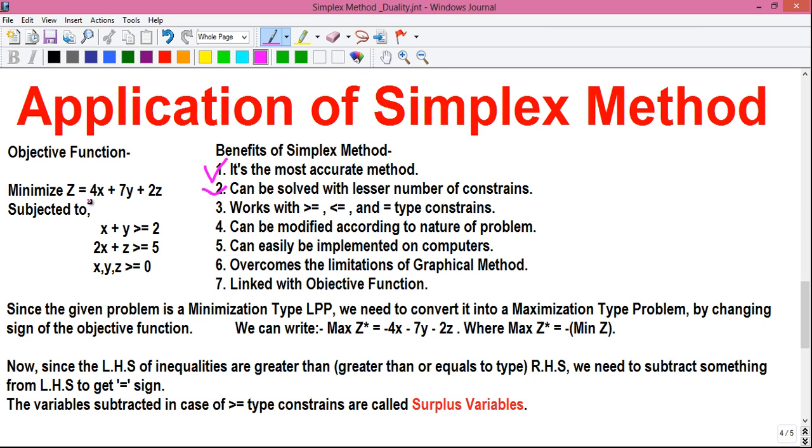As you can see, in our objective function, the number of unknowns are 3, x, y and z. As you may already know, to find out three unknowns, we need at least three number of equations.